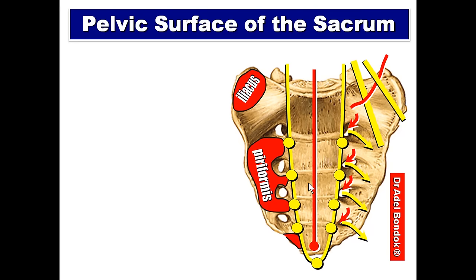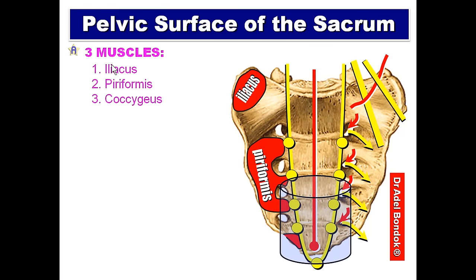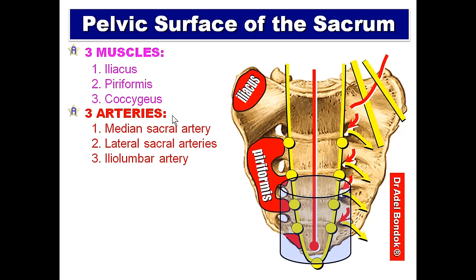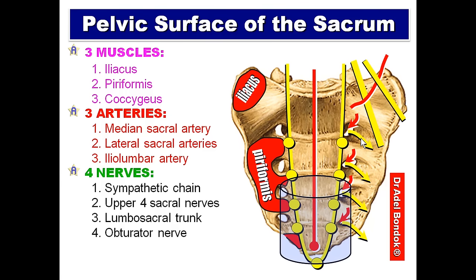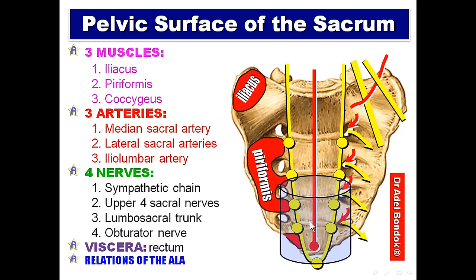In front of the last three pieces of the sacrum is the rectum. In summary, the sacrum is related anteriorly to three muscles — iliacus, piriformis, coccygeus — three arteries — median sacral artery, lateral sacral arteries, and iliolumbar artery — and four nerves: sympathetic chain, ventral rami of the upper four sacral nerves, lumbosacral trunk, and obturator nerve. The ala of the sacrum is related to iliacus, lumbosacral trunk, obturator nerve, and iliolumbar artery.